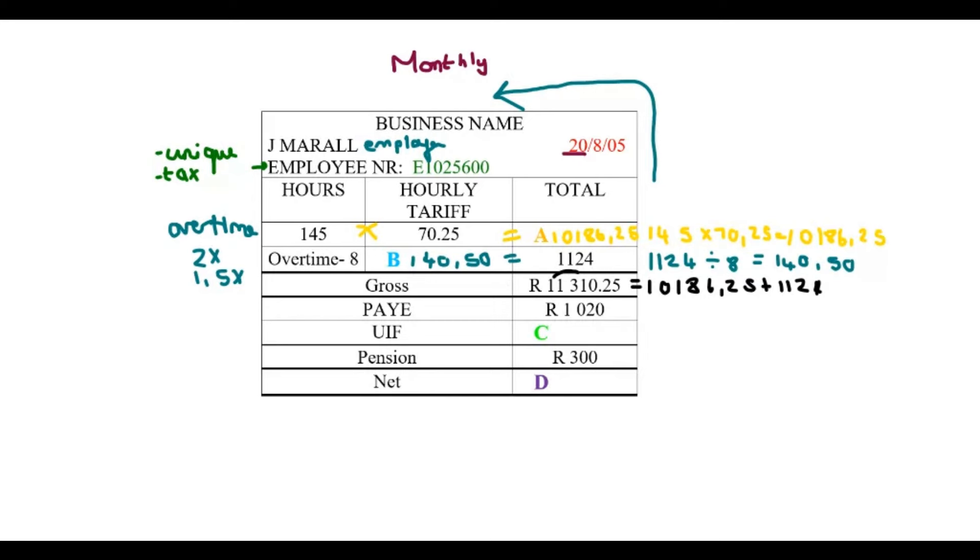Next is your payee, which is also just your tax. And you don't really have to worry about that right now. But his company paid 1,020 rand to tax. Next is your UIF, or Unemployment Insurance Fund Contribution. And we need to calculate how much that is. Remember...